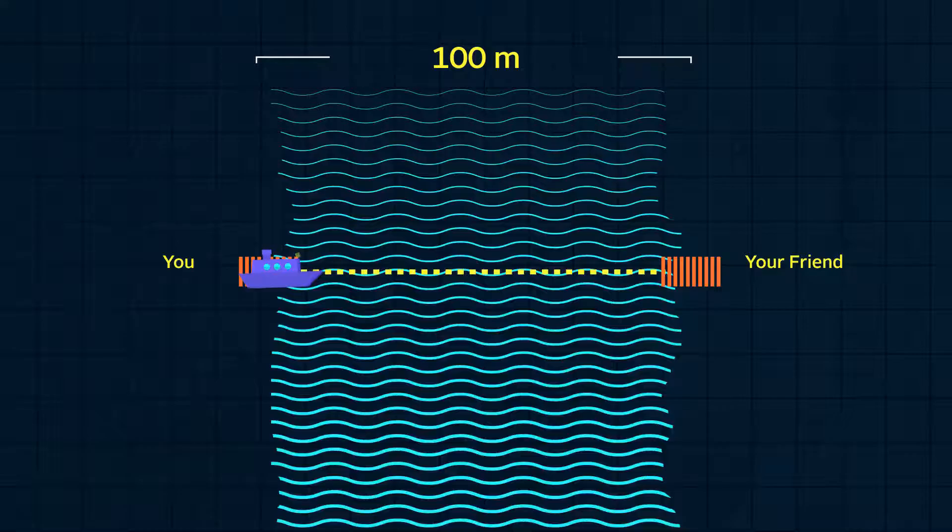The setup was just the same, but we walked the toy boat back to our dock and released it from there instead of releasing it from the point 60 meters downstream. What point on the opposite bank should we aim for?